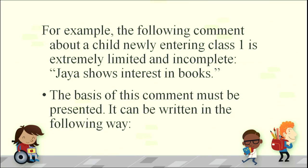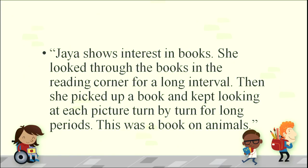A better way to write it: 'Jaya shows interest in books. She looks through the books in the reading corner for a long interval. She picked up a book and kept looking at each picture turn by turn for long periods. This was a book on animals.' You could add: 'She started talking about the animals — there is a cow, a cat, a dog. She said: I have a pet dog at my house, I have a cow.' So she is taking out meaning from the pictures — she is reading. This is the process; it has begun.